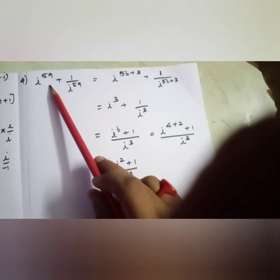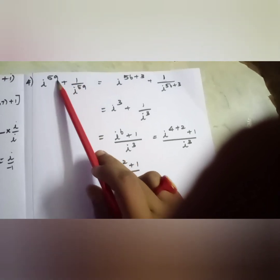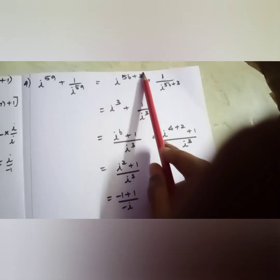Sum 4: i power 59 plus 1 by i power 59. 59 is not exactly divisible by 4; 56 is divisible, so the remainder is 3. We write i power (56+3) plus 1 by i power (56+3), giving i power 3 plus 1 by i power 3. Taking LCM: (i power 6 plus 1) by i power 3. i power 6 = i power (4+2), so the remainder is i squared. i squared plus 1 = minus 1 plus 1 = 0. So the answer is 0.